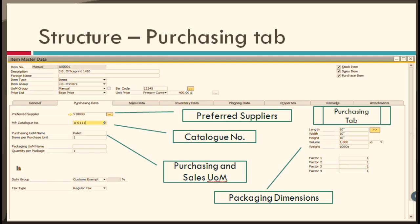Another important field is the manufacturer catalog number. You can assign the catalog number of an item from the default vendor's catalog. This catalog number is displayed on purchasing and sales documents.